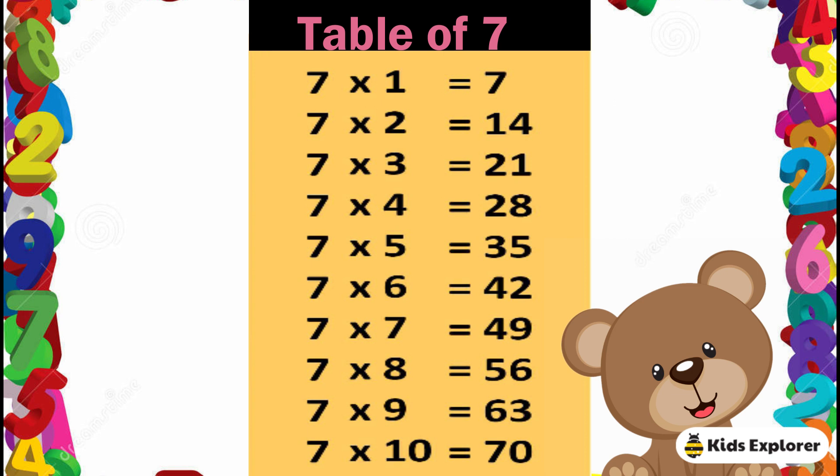Table of 7. 7 1's are 7, 7 2's are 14, 7 3's are 21, 7 4's are 28, 7 5's are 35, 7 6's are 42, 7 7's are 49, 7 8's are 56, 7 9's are 63, 7 10's are 70.